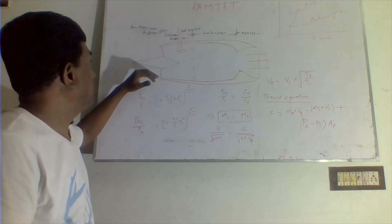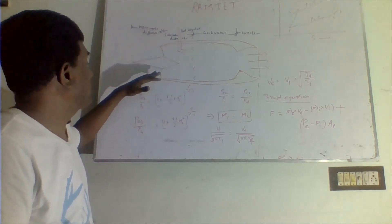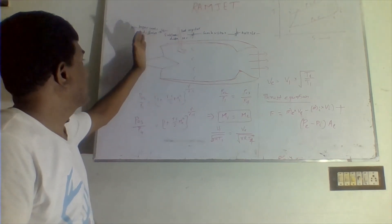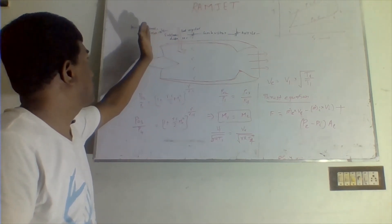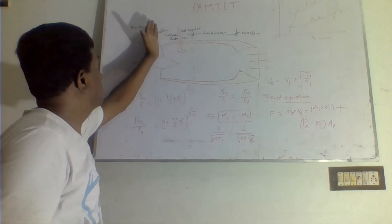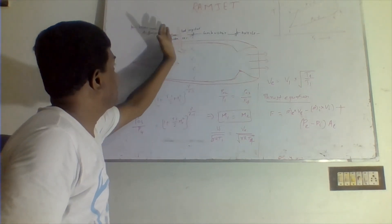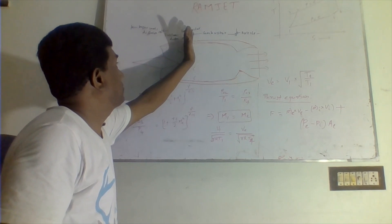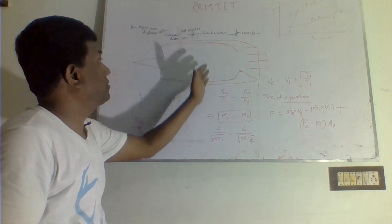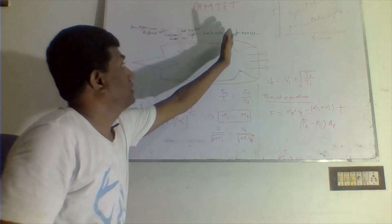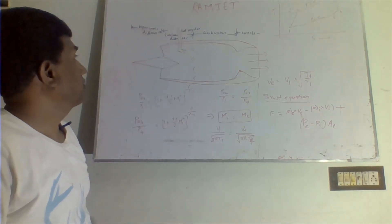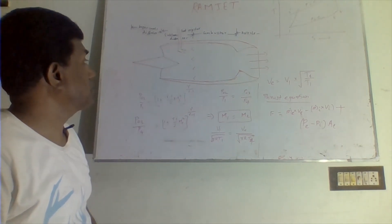The ramjet engine has a part called the conical spike, which is divided into a supersonic diffuser and a subsonic diffuser. After the diffusers comes the combustion chamber, and at the end is the nozzle.